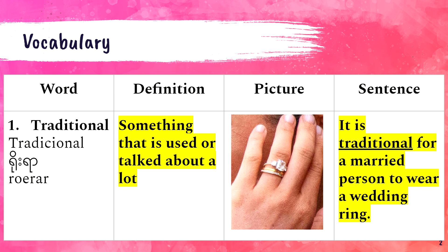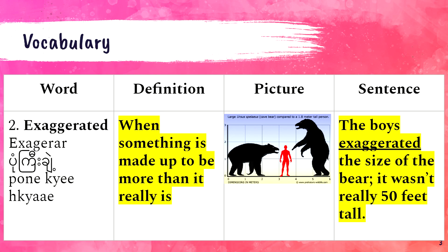The next word is 'exaggerated.' Exaggerated is when something is made up to be more than it really is. My example sentence says the boys exaggerated the size of the bear — it wasn't really 50 feet tall. You've got a picture of a man and a bear, and a bear is still pretty tall but not as tall as maybe this boy would tell you. When you're exaggerating something, it is really blown out of proportion. Like if I say I ate everything last night — I didn't actually eat everything. I'm exaggerating to show that I'm really hungry and maybe I ate a lot.